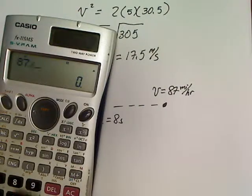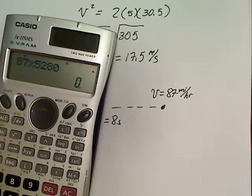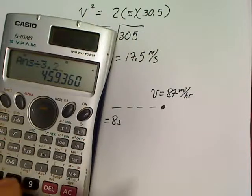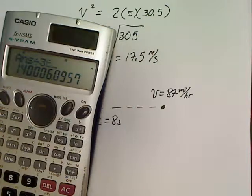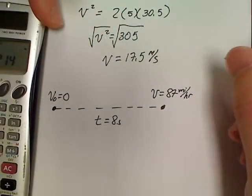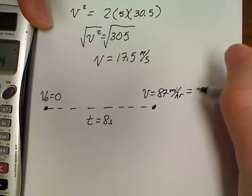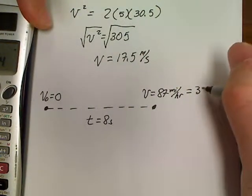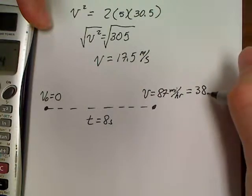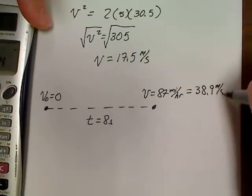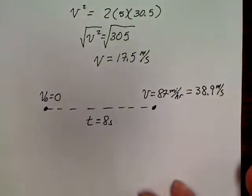So, 87 times 5,280, divide by 3.281, divide by 3,600. So, we've got 38.9 meters per second. If you don't know how to do those conversions, you need to go back to earlier videos on how to do your conversions. So, that's 38.9 meters per second.